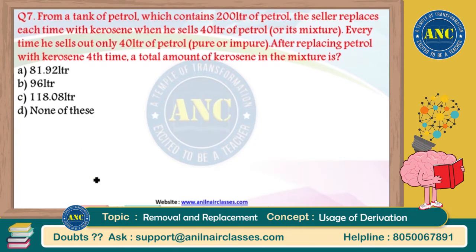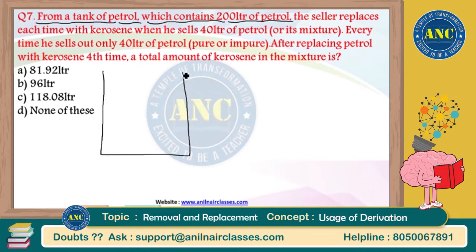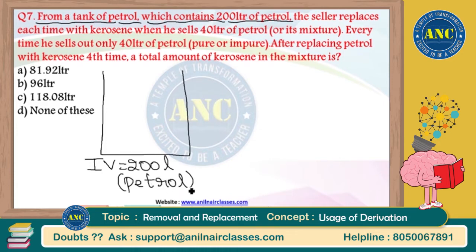Question number seven - this is how people should understand methods to solve questions on removal and replacement. A beautiful question: from a tank of petrol which consists 200 liters of petrol. Let us read statement by statement. Initial volume is 200 liters of petrol, no adulteration at this present moment.